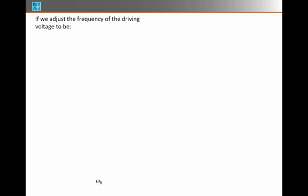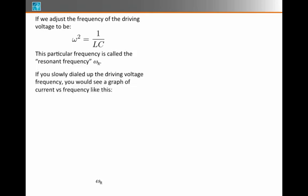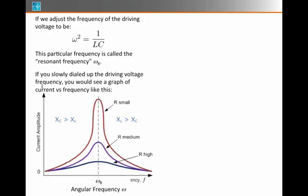If we adjust the frequency of the driving voltage source to be omega squared equals 1 over LC, that's called the resonance frequency. And what you would see as a function of the driving voltage frequency is a graph that looks like this. You'd see current amplitude graphed on the vertical axis versus angular frequency at which you're driving the circuit, omega. And a very particular thing would happen when omega equals omega sub R. That's when the current would be as large as it could possibly be.